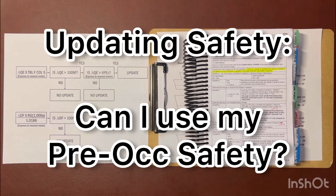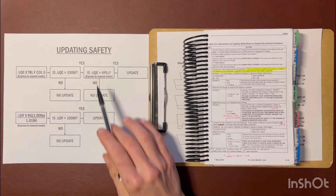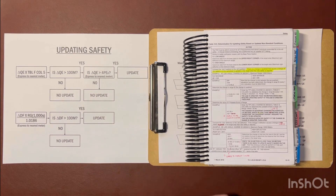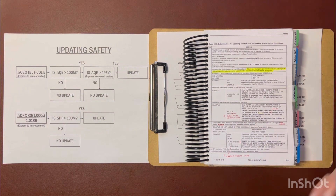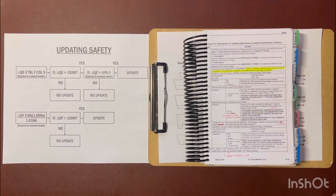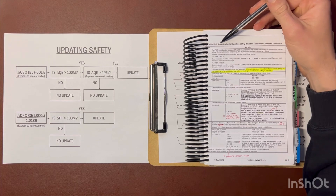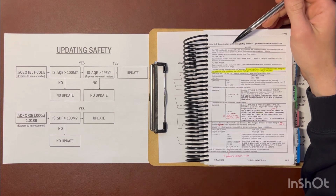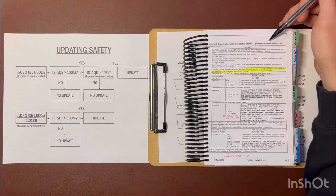All right, team. So not working on specific homework, but we are going to have a quick discussion on updating safety. I'm in the TC on page 15-15 at table 15-5 — the determination for updating safety based on updated non-standard conditions.